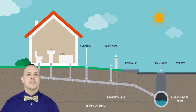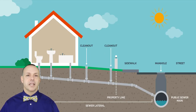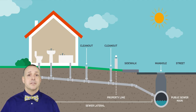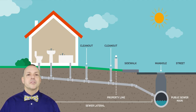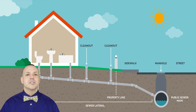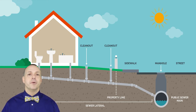Now, these two systems are extremely different and both offer some advantages and disadvantages. First, let's start with the sewer system. If you are purchasing a home that is connected to the sewers, that means your wastewater is transported to the treatment plant and not stored and treated on site at the property.